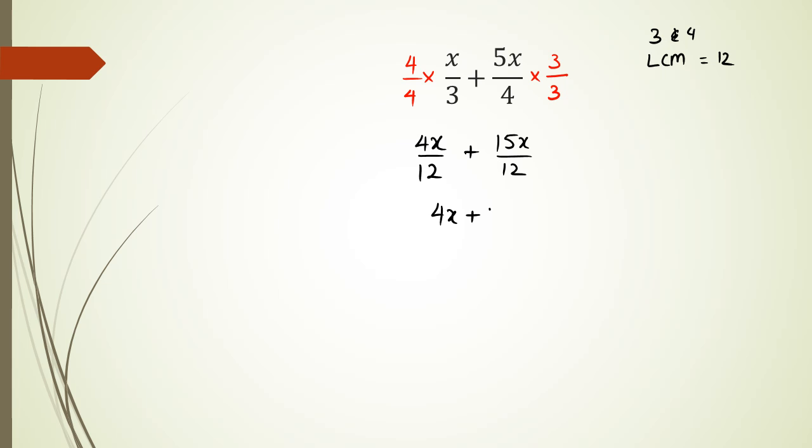Because they're now common denominators, I can put this whole fraction under the same denominator, which is 12. Now combining 4 and 15, I get 19x over 12. And that's basically it.